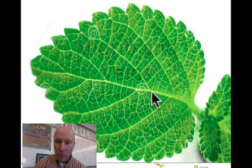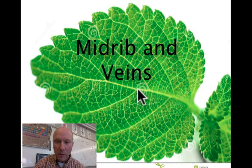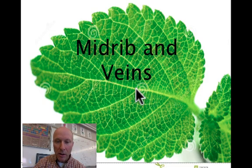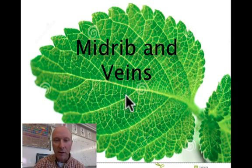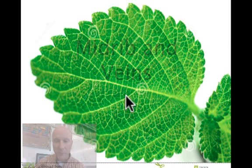The midrib here is the main vein that branches off into the side veins, and each of these side veins gets smaller and smaller, feeding each one of the cells inside the leaf.